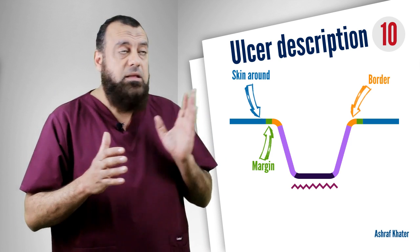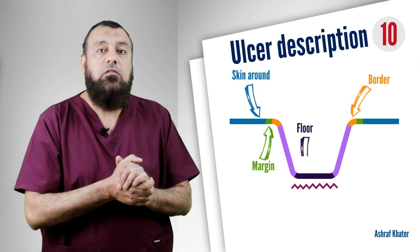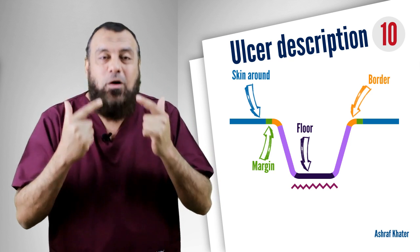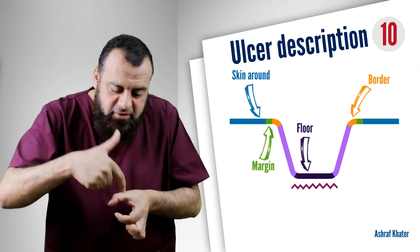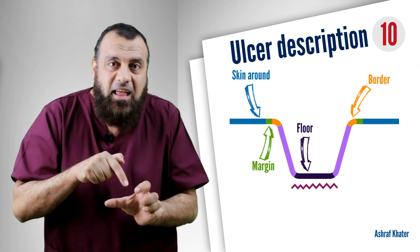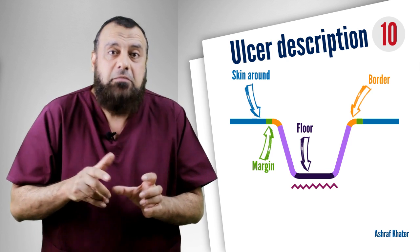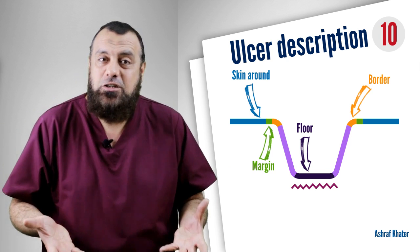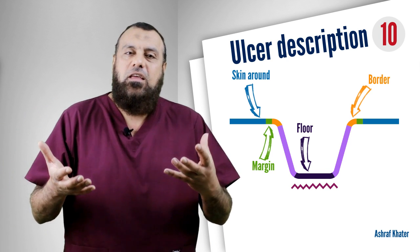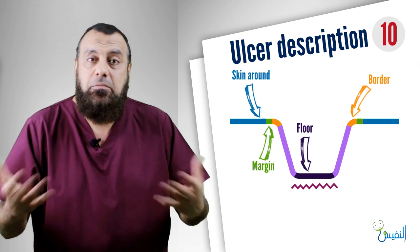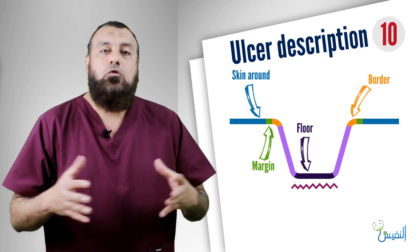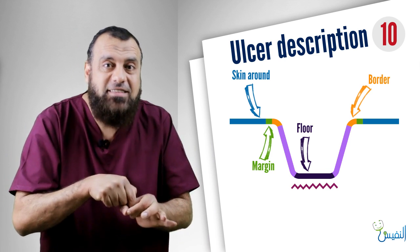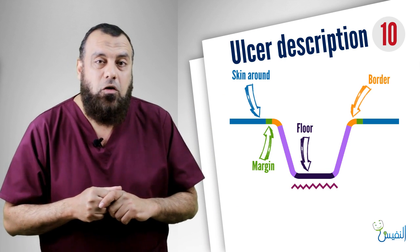The fourth item is the floor of the ulcer — what you see visually. If it is a healing ulcer, the floor may contain healthy granulation tissue. In an infected ulcer it may contain pus and debris. In malignancy it may contain necrotic material. This is the floor of the ulcer.